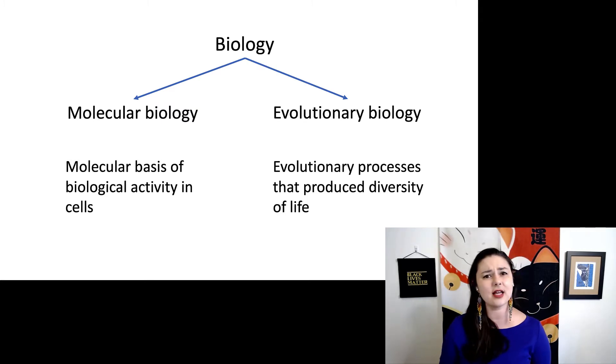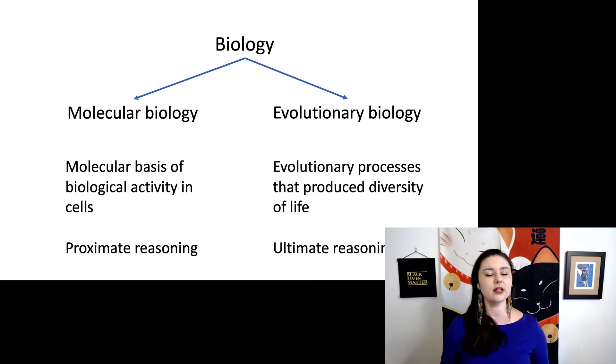Evolutionary biology takes the opposite approach. Now we're looking at the evolutionary processes that produced the diversity of life. Evolutionary biology is looking at things from a really big perspective, trying to figure out how did all of this come to be. In molecular biology, you tend to see a lot of people use proximate reasoning. What is happening right now? In evolutionary biology, you're going to find ultimate reasoning more common. Why did this come to be in the first place?